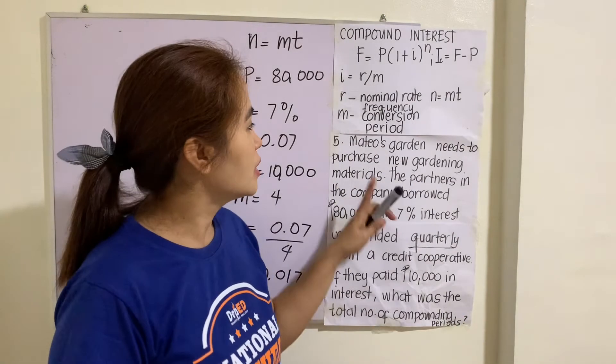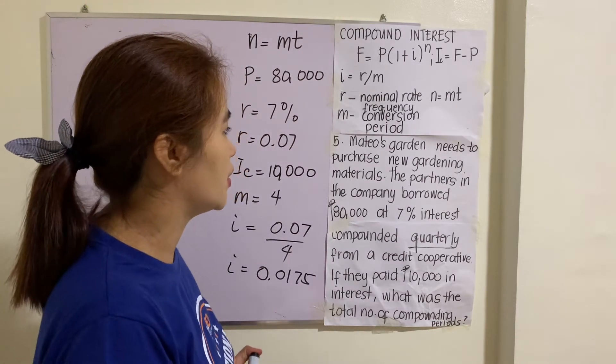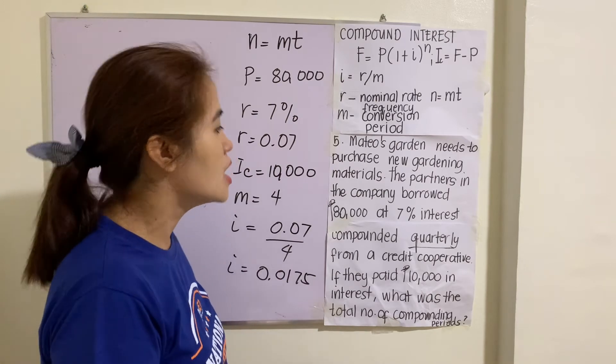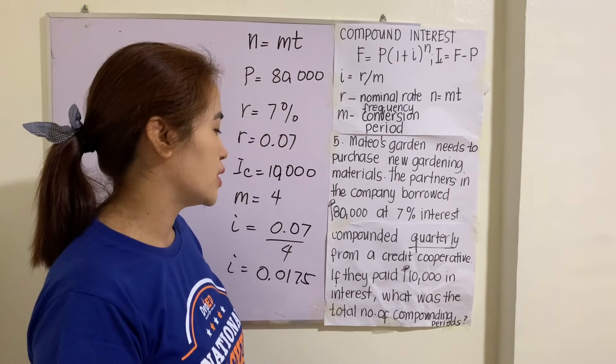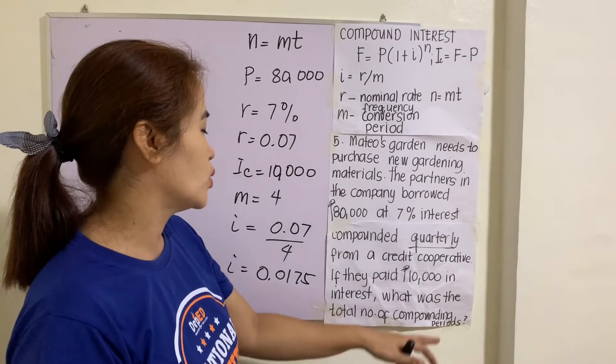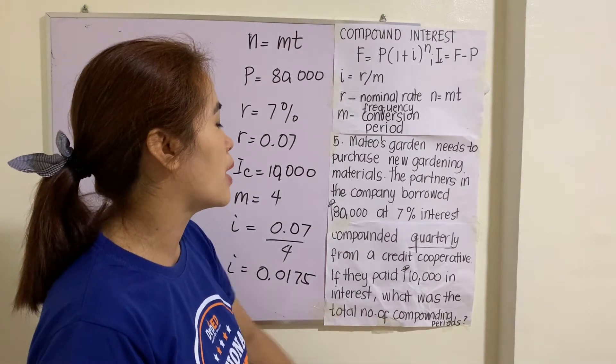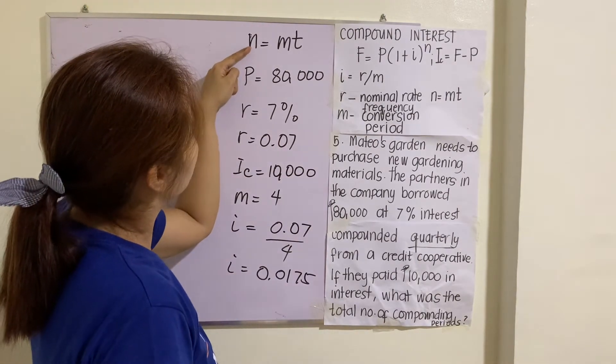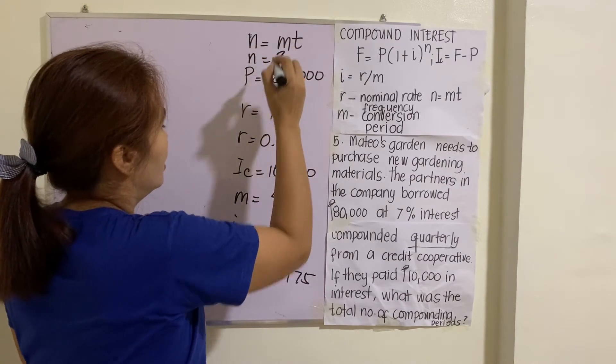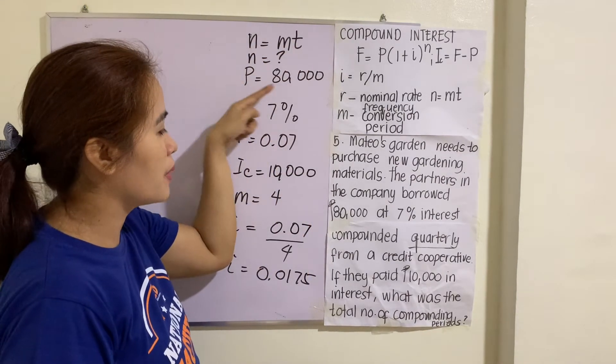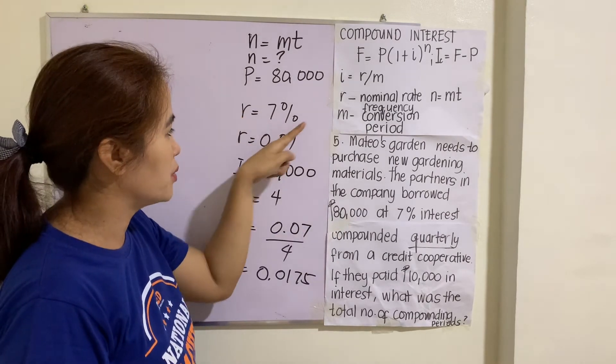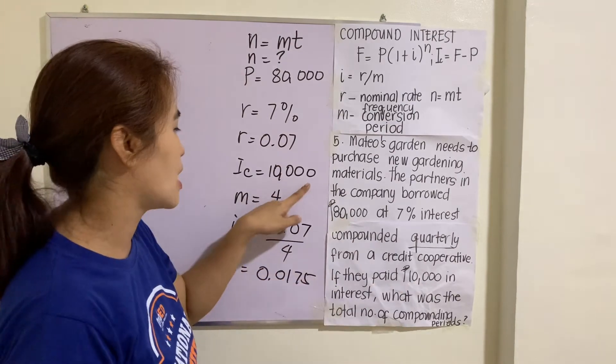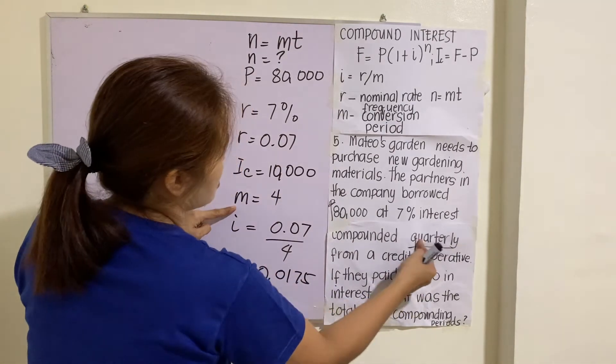Example number five: Mateus Garden needs to purchase new gardening materials. The partners in the company borrowed $80,000 at 7% interest, compounded quarterly from a credit cooperative. If they paid $10,000 in interest, what was the total number of compounding periods? The unknown here is N, the total number of compounding periods. P = $80,000, R = 7% = 0.07, I_c = $10,000, M = 4 quarterly.